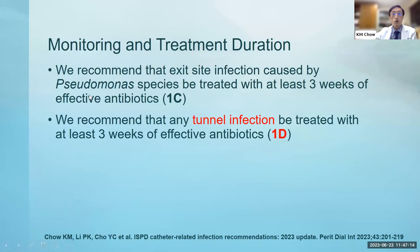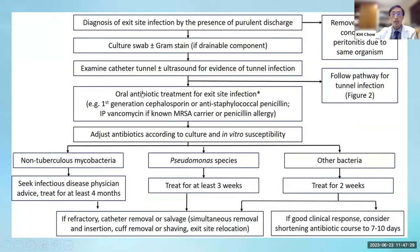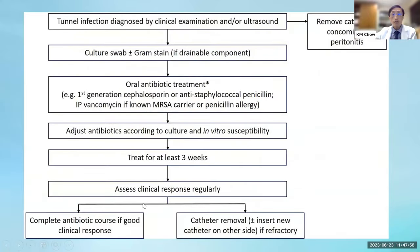We recommend exit site infection caused by Pseudomonas to be treated with at least three weeks of antibiotics, and any tunnel infection to be treated with at least three weeks of effective antibiotics. Once we diagnose an exit site infection, we give empirical antibiotics and adjust according to the organism: three weeks for Pseudomonas, two weeks for other bacteria. If there is a good clinical response, consider shortening the antibiotic course to seven to ten days. If this is a tunnel infection, the key is three weeks of antibiotics. If there is concomitant peritonitis, we may need to remove the catheter.